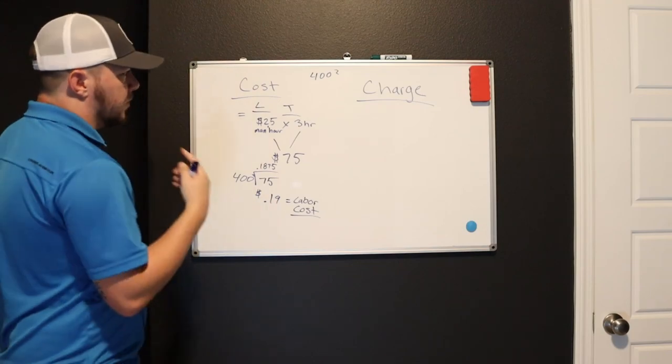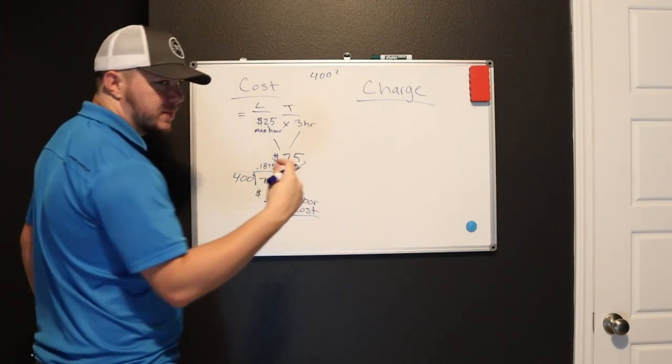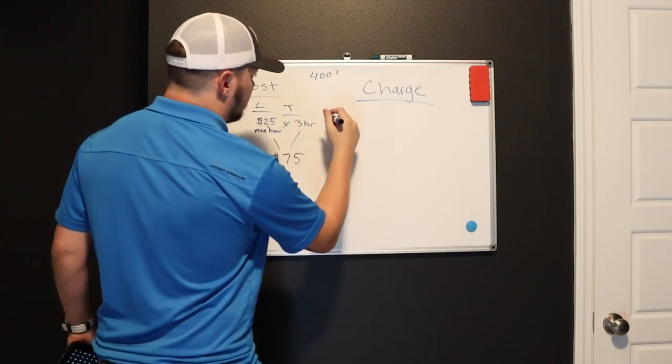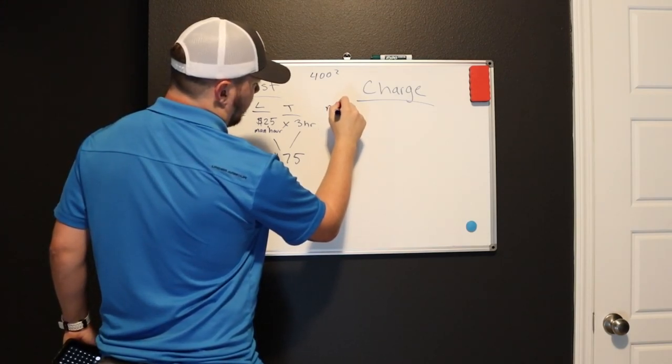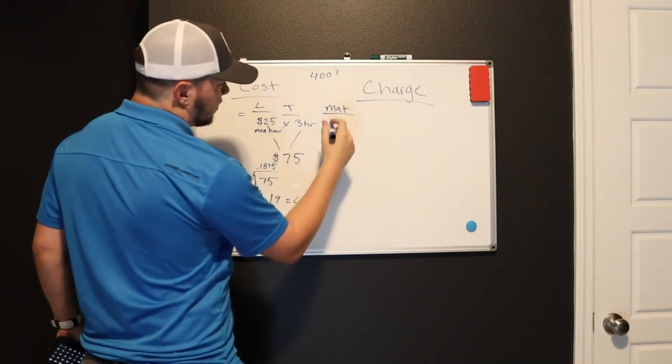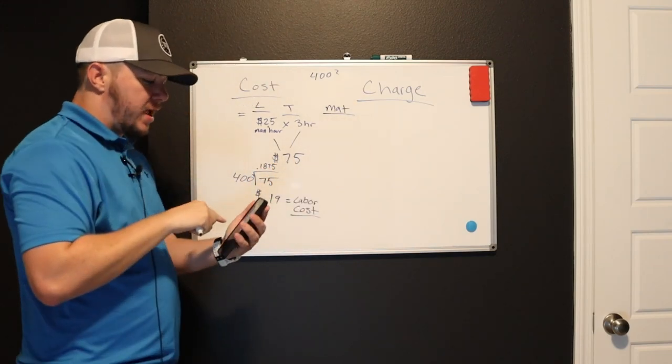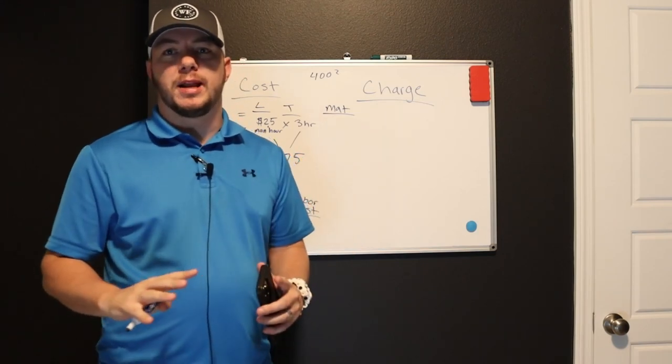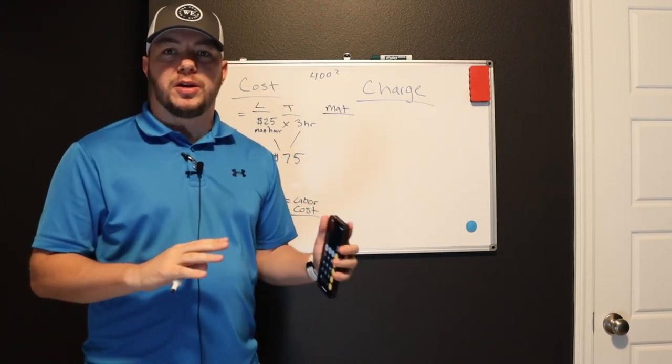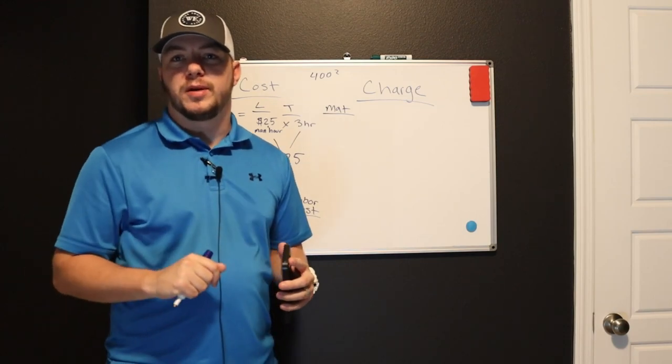Now let's go to material. I don't really have enough room here because my whiteboard is not big enough, but let's go to material. So let's say you have material. Let's go to material. So let's say it's 400 square feet. Let's say the can of pro more 200, Benjamin Moore, ultra spec 500, whatever you're using. Let's say the can says that you can do 300 square feet to a gallon.